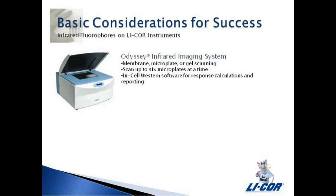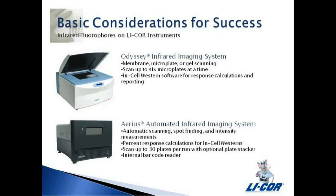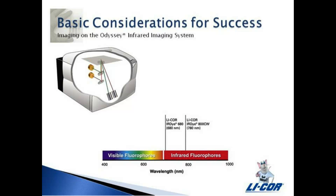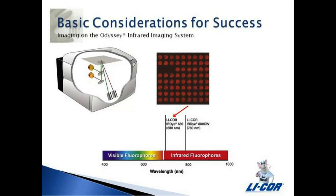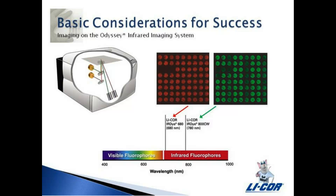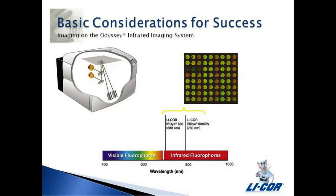In-cell westerns assayed with the infrared fluorophores on the Odyssey Infrared Imager or the Arius Automated Infrared Imaging System are capable of simultaneously detecting two targets using two spectrally distinct dyes. Separate lasers and fluorescence detectors are used for each dye. IR-dye 680 emits at approximately 700 nanometers and IR-dye 800 CW at approximately 800 nanometers. The images can be viewed separately or overlaid.